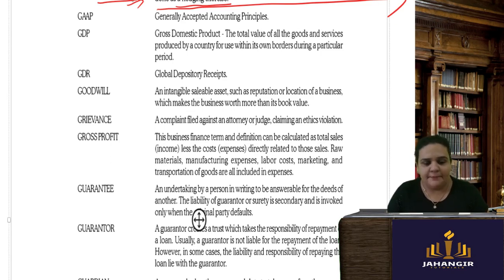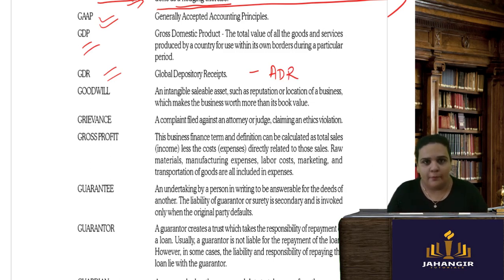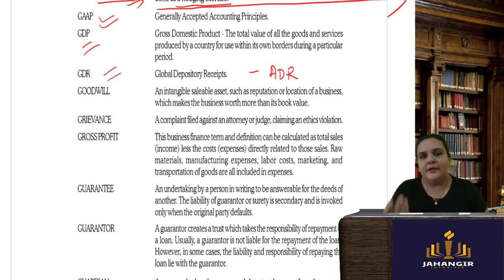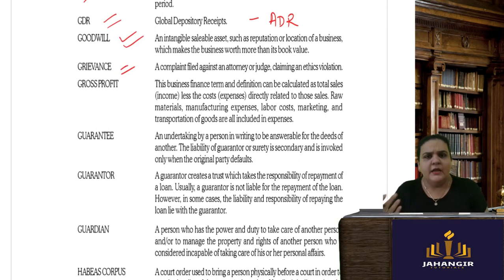Starting with G: GAAP stands for Generally Accepted Accounting Principles. GDP is Gross Domestic Product. GDR is Global Depository Receipt — similar to American Depository Receipts, these are receipts issued across the globe in the form of depository receipts for shares issued by a foreign country. Goodwill is an intangible asset.